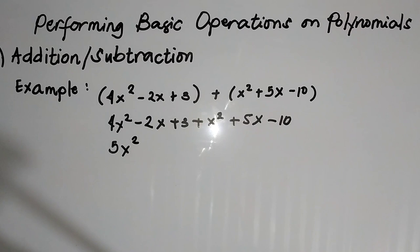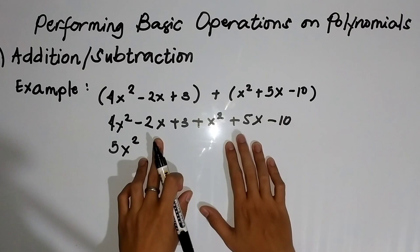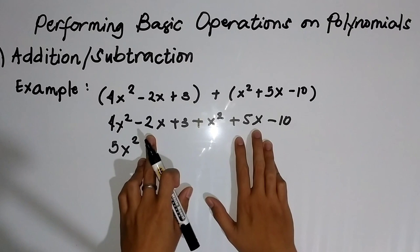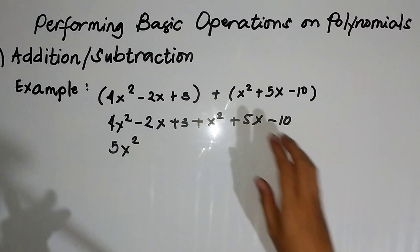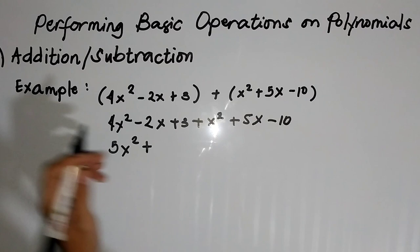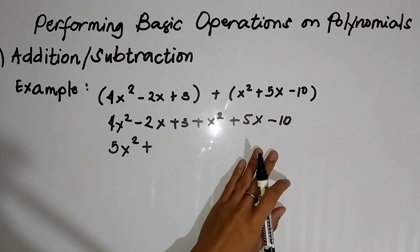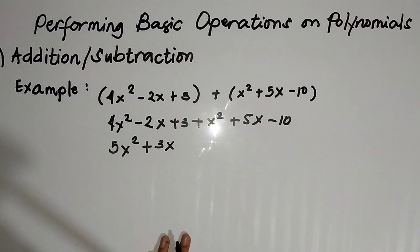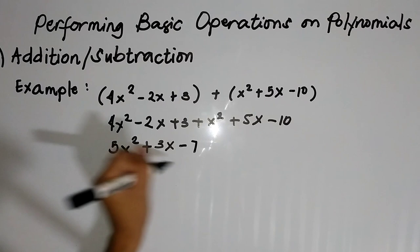Next, hanap ulit tayo ng like terms. We have negative 2x and 5x — same variable. Since it is negative and positive, magkaiba yung sign, gamitin mo yung sign ng mas malaking term. Positive 5x is greater than negative 2x, so we copy the positive sign and subtract: 5x minus 2x equals positive 3x. Next, solve yung last terms: 3 and negative 10. That would be equal to negative 7, and that will be our final answer.